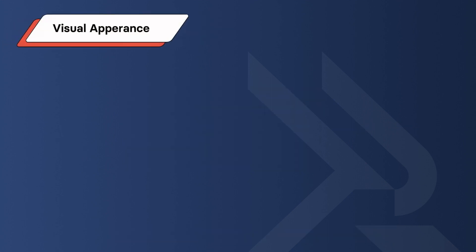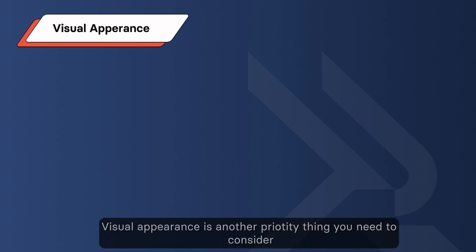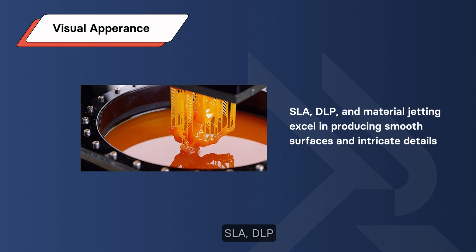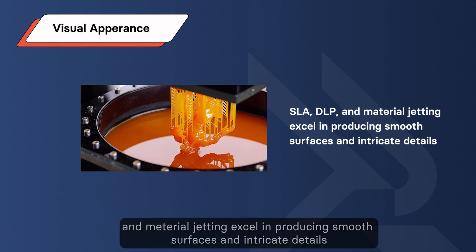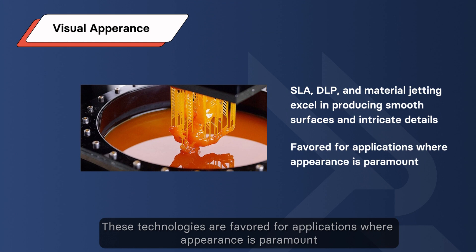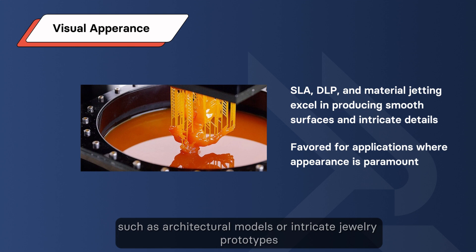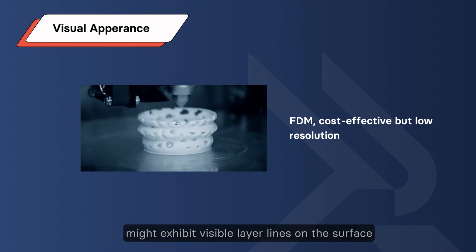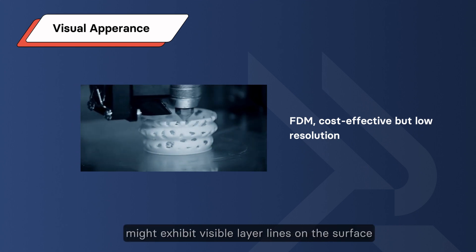Consideration 5: Visual Appearance. Visual appearance is another priority to consider. SLA, DLP, and Material Jetting excel in producing smooth surfaces and intricate details. These technologies are favored for applications where appearance is paramount, such as architectural models or intricate jewelry prototypes. FDM prints might exhibit visible layer lines on the surface.